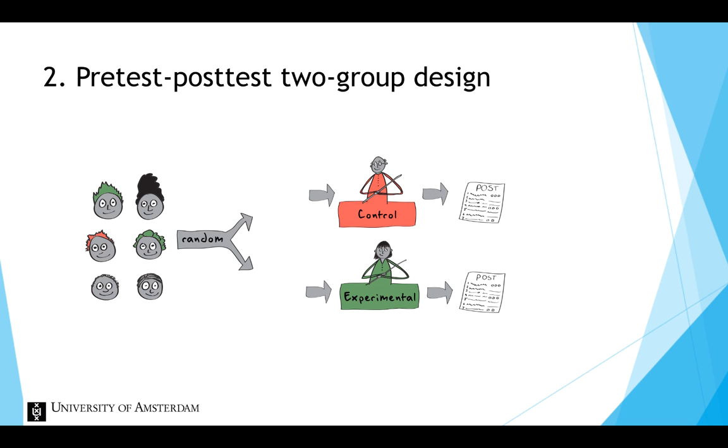The second design is the two-group pretest-posttest design, which adds a pretest of the dependent variable before exposure to the independent variable. With a pretest, you can check whether, for example, both groups were equally proficient at math before being exposed to one of the conditions.